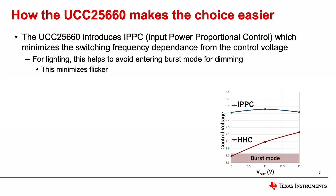For lighting, this helps to avoid entering burst mode for deep dimming. Here you can see a comparison between IPPC and traditional hybrid hysteretic control at the same power level. As the V-out changes, hybrid hysteretic control may enter burst mode at the lower voltage level, whereas IPPC has a relatively flat control voltage.